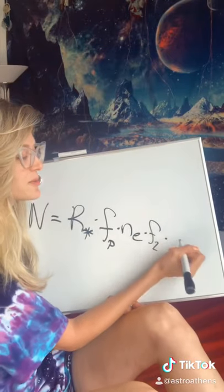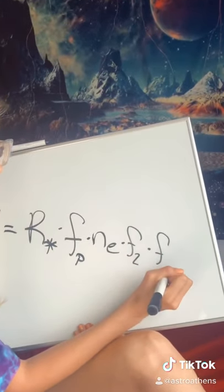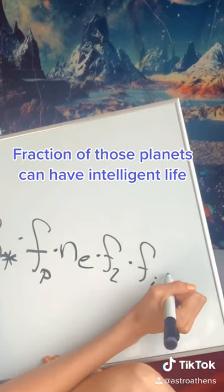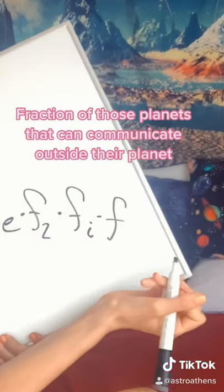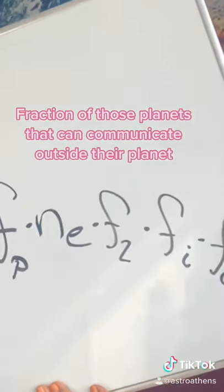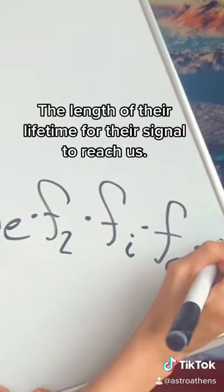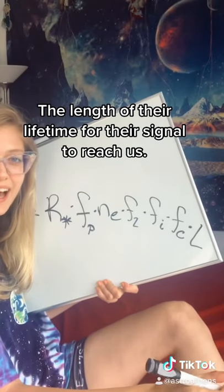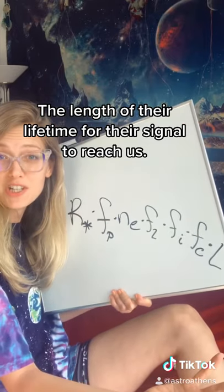Then that's multiplied by the fraction of those planets that can have intelligent life, and then how many of those planets can actually have communications, and finally it's multiplied by the lifetime in which they could last in order to have communication with us.